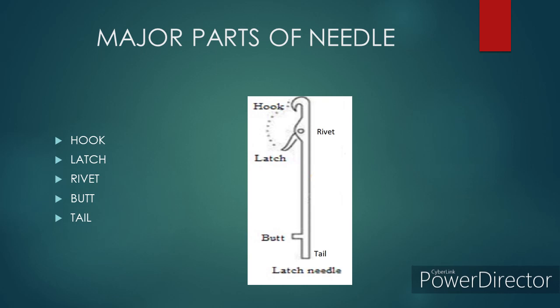The needle moves in the cam with the help of the butt. The last part is the tail — the tail is the lowermost part of the needle, below the butt. It provides support to the needle during its movement in the cam.